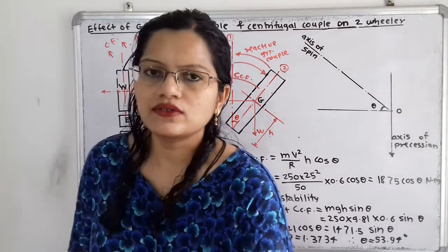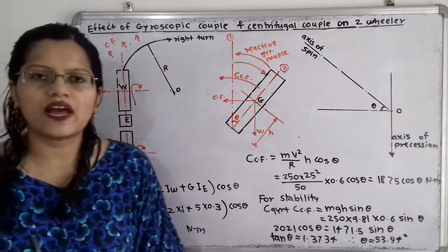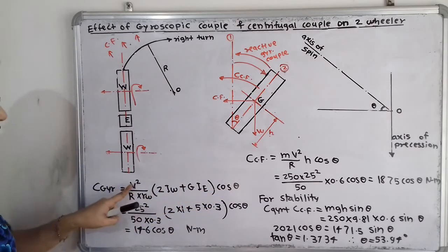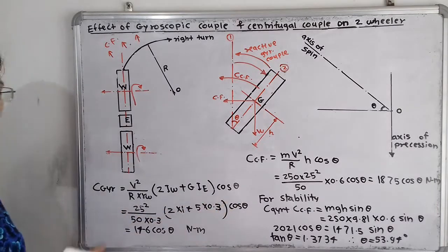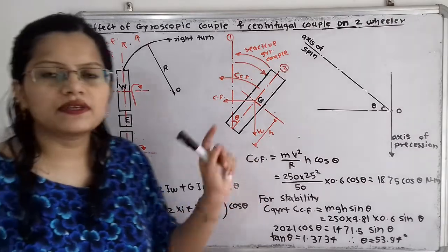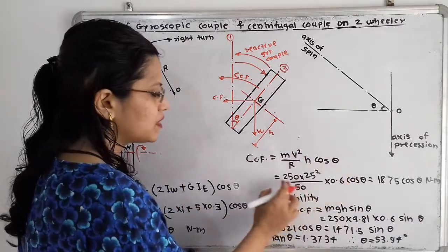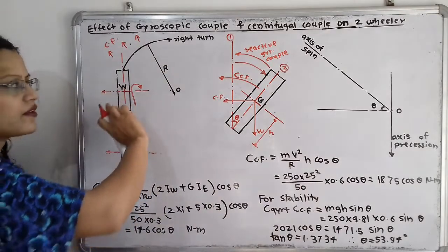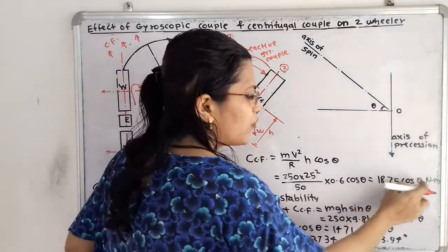Putting the given data into the formula for gyroscopic couple: (V² / R·RW) × (2IW + G·IE) × cosθ = (25² / 50 × 0.3) × (2×1 + 5×0.3) × cosθ = 146 cosθ N·m. For the centrifugal couple: mV²h cosθ / R = 250 × 25² × 0.6 × cosθ / 50 = 1875 cosθ N·m.